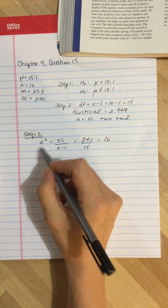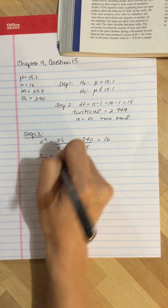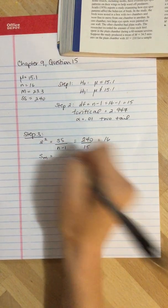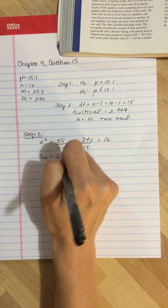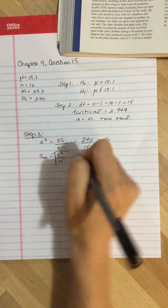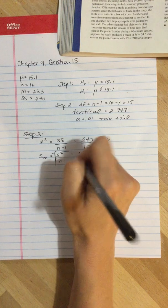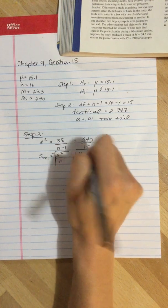We're going to use that variance and plug it in to find the estimated standard error. So we take 16 divided by 16 and square root it.